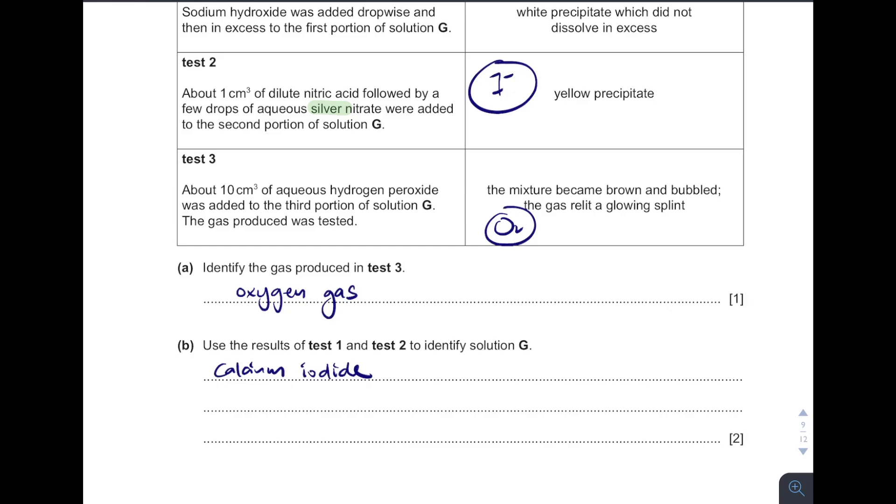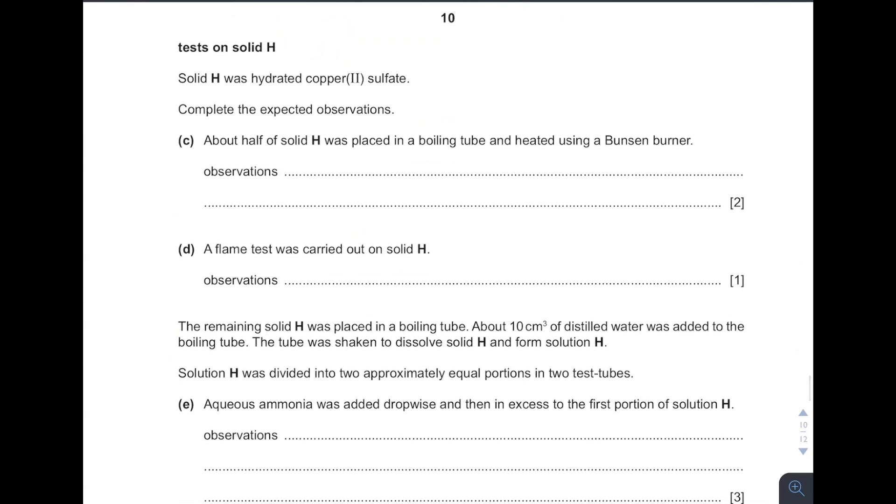This one. Given here, hydrated copper sulfate. So it is hydrated. So what is the observation when it is heated using a Bunsen burner? Hydrated, so condensation will take place. And what else? From hydrated becomes anhydrous copper sulfate. What is the color for anhydrous copper sulfate? It is white in color. So solid turns white.